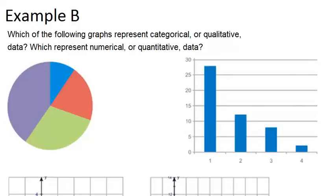In example B, it says which of the following graphs represent categorical or qualitative data? Which represent numerical or quantitative data?